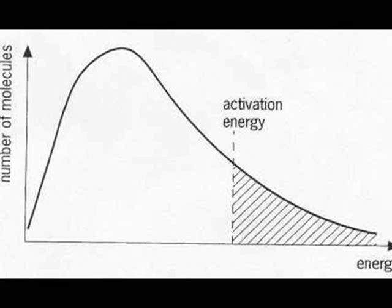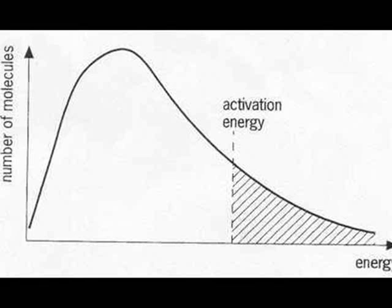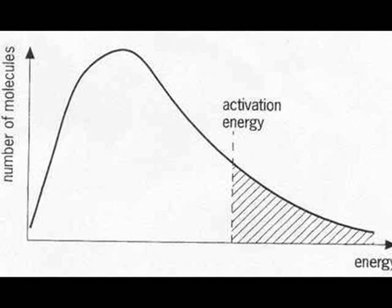There are four key areas to the curve. The first is right at the origin. There are no particles that have no energy. All particles have some energy. It's impossible for particles not to have energy.